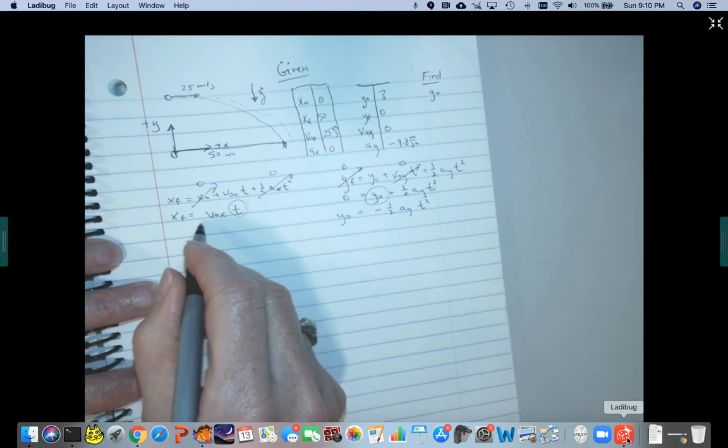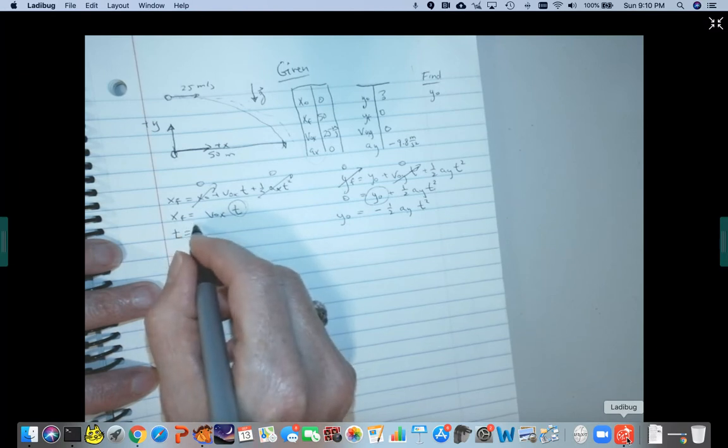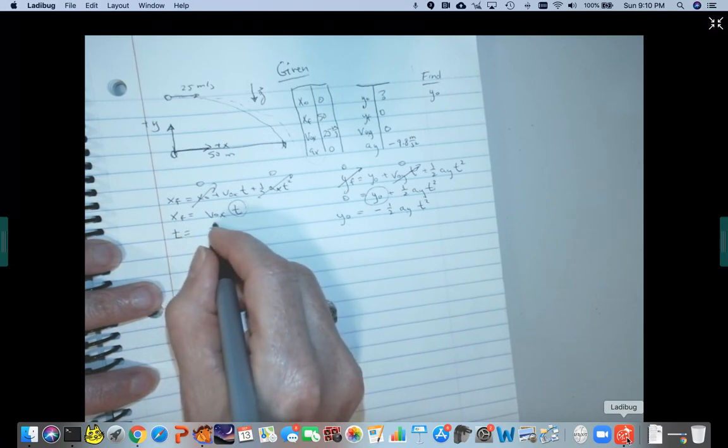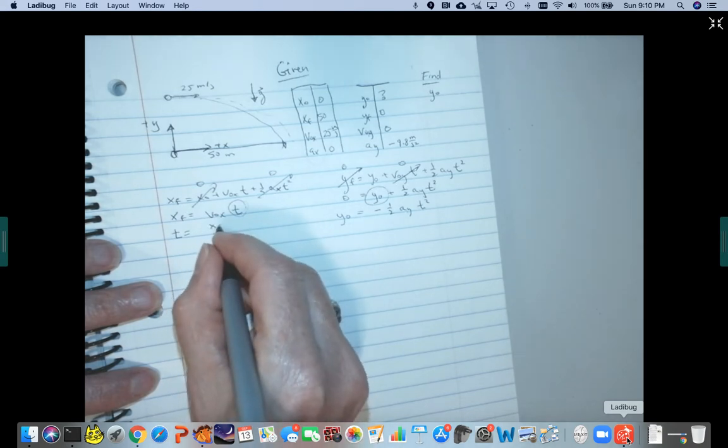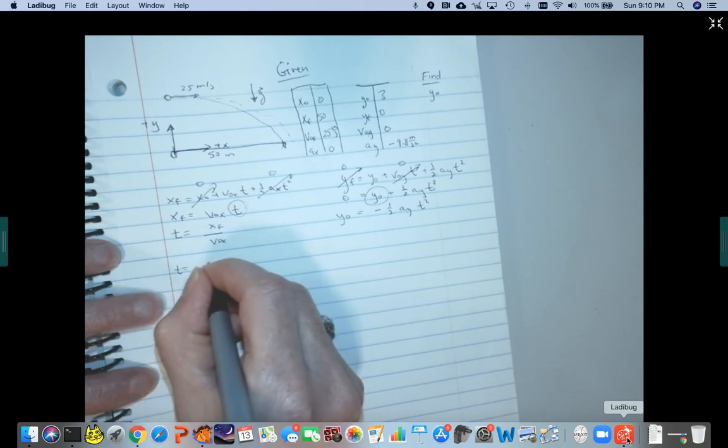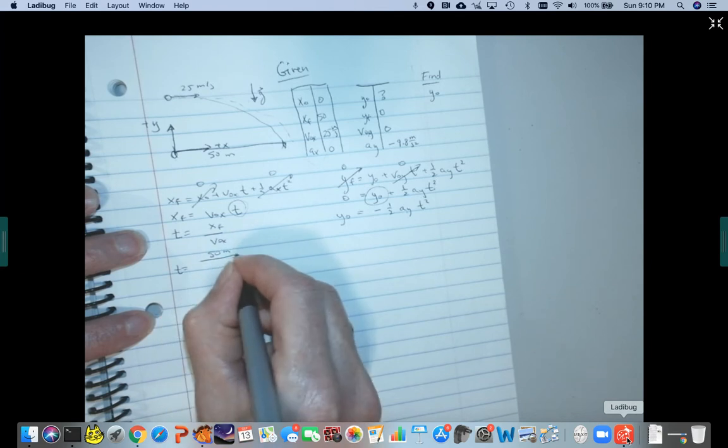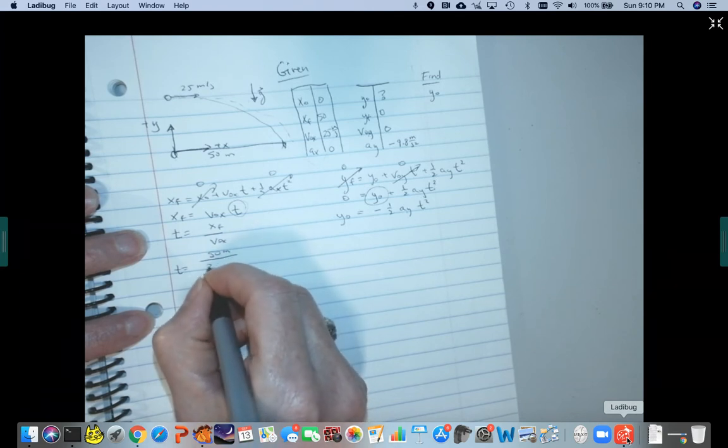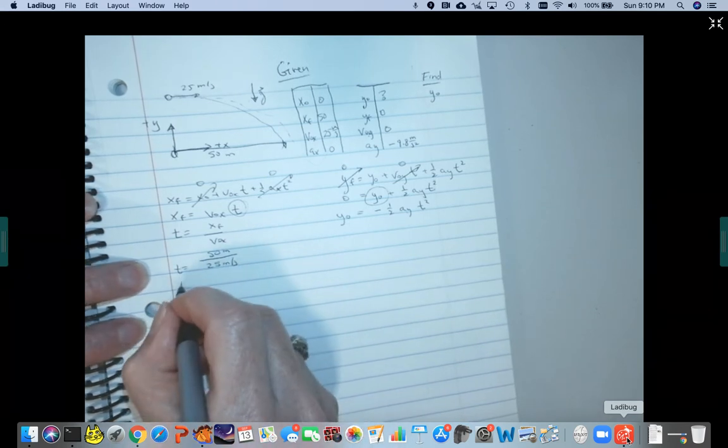So we can either do this out in two steps or we can solve for t and plug it in over here. I'm going to do it in two steps just for, I don't know why, just because I want to. All right, so I'm going to solve for t and then divide both sides by v0x. Okay, so t equals x final. So that's 50 meters dividing by v0x, 25 meters per second. I can do that math in my head. I get t equals two seconds.